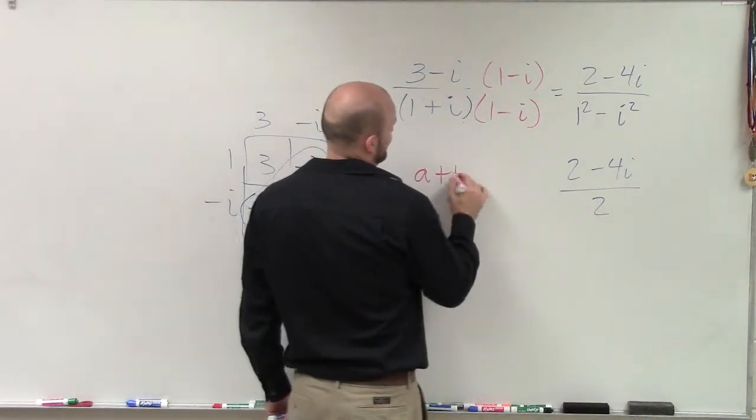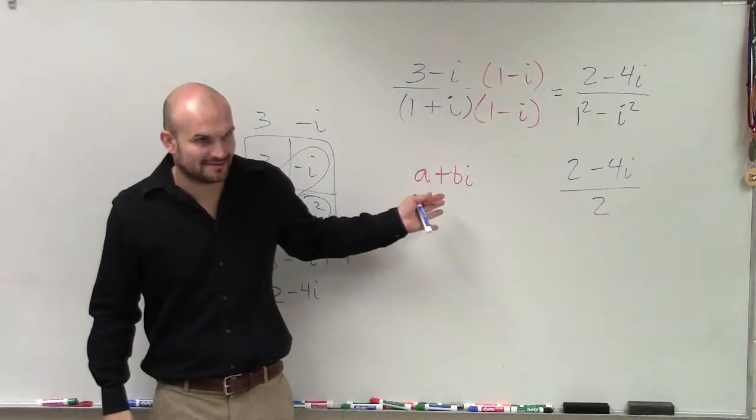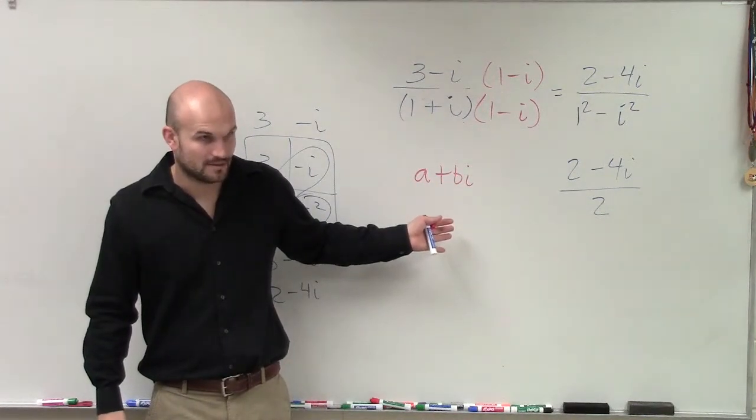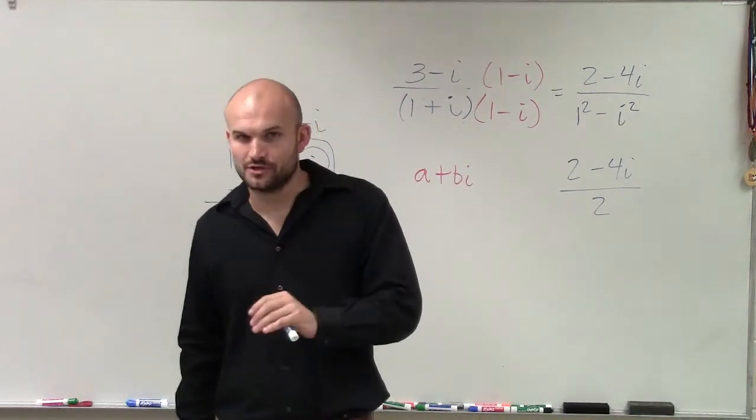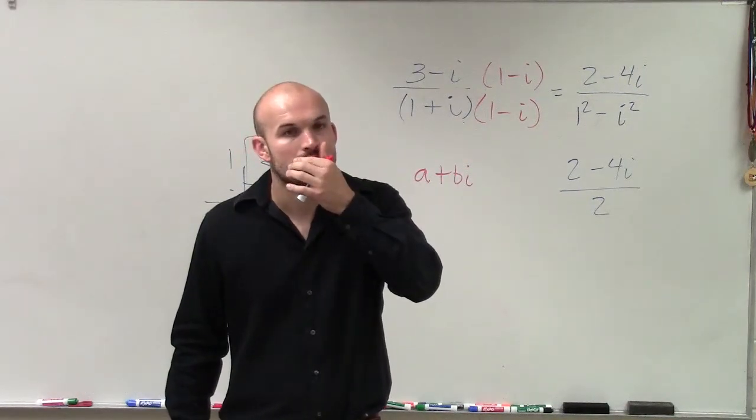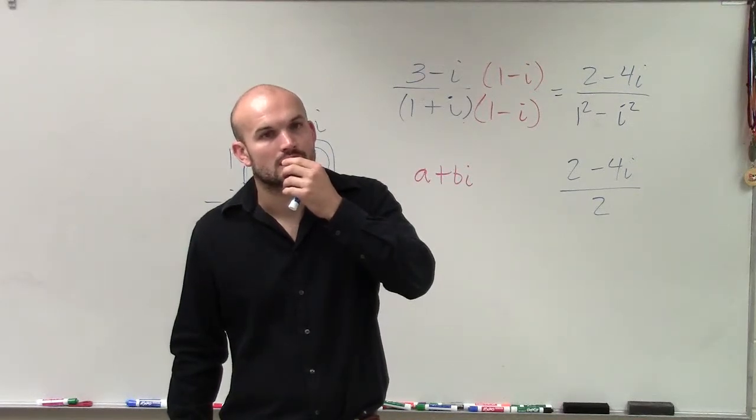So, does this look like that? No. No. Not really. We can multiply everything by two, but yes? You can cross the two and two and four and two out and make it so it's one minus two i.